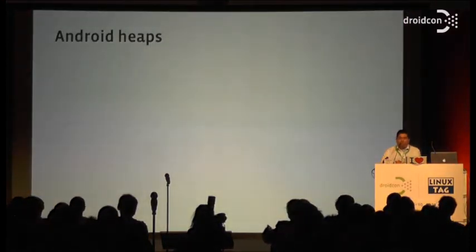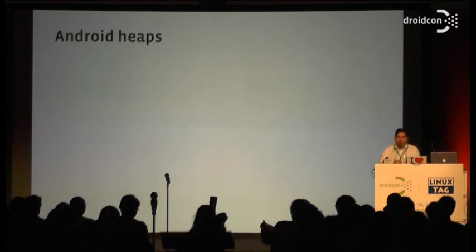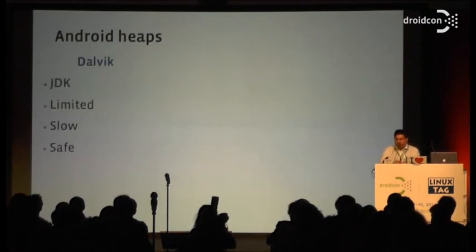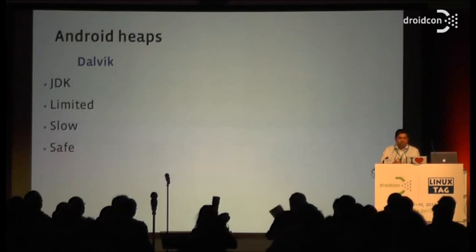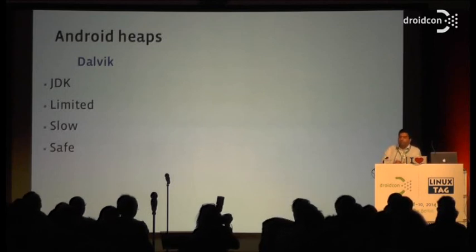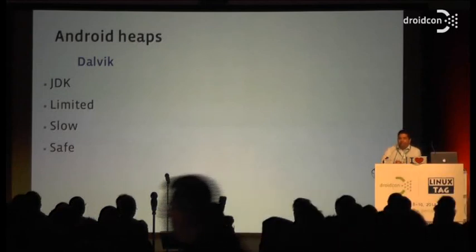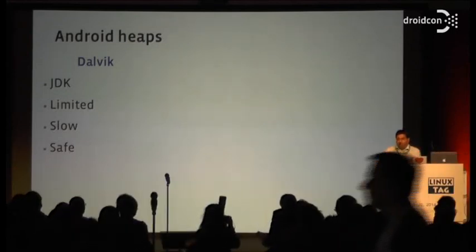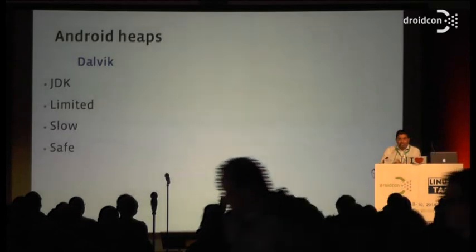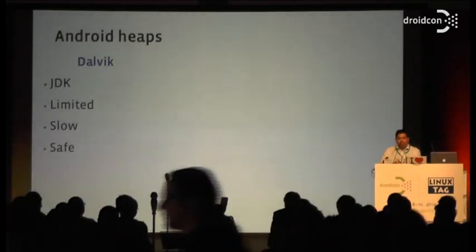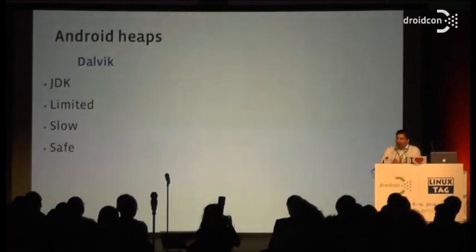Before I talk about solutions, I'm going to talk about the heap. Android doesn't have one heap, it has lots of heaps. The heap most people use day-to-day is called the Dalvik heap — the Dalvik virtual machine. This is allocated from the new operator in Java. As I said, it is very limited. The device manufacturer sets the limit. It is very slow — any new call can trigger garbage collection. But it is safe. If you forget to close something, the garbage collector takes care of memory for you.